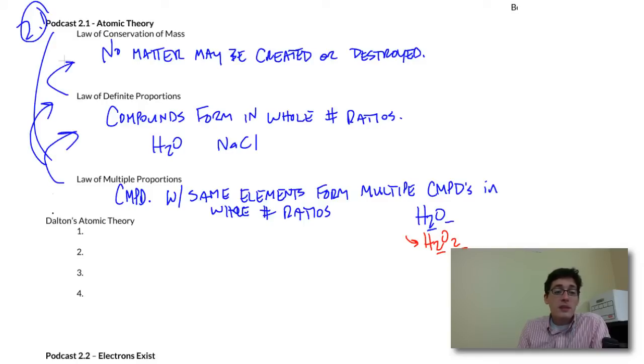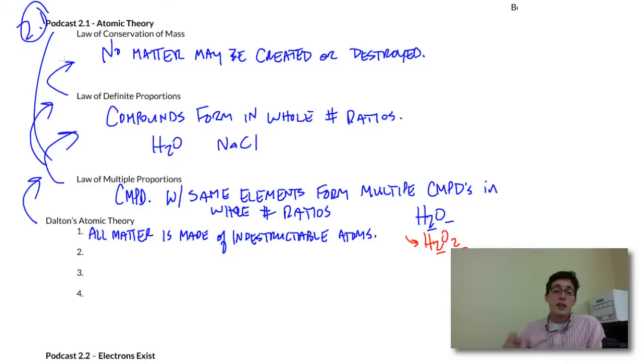All of these laws, laws 1, 2, and 3, are based off of Dalton's atomic theory. And his atomic theory had four ideas. The first one is that all matter or all stuff is made of indestructible atoms. So I cannot destroy these atoms. I cannot break them. I can't rip them apart. And I can't take any and squish them into something new. I can combine them into new things, but I cannot take two and squeeze them into one.